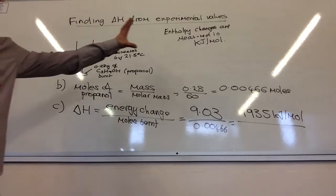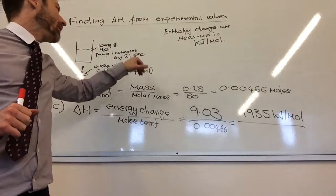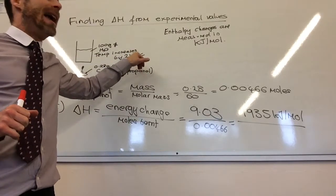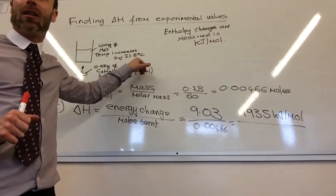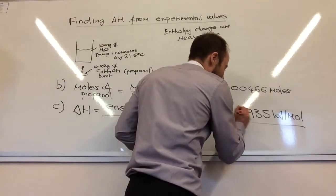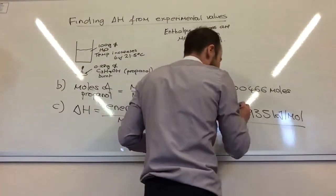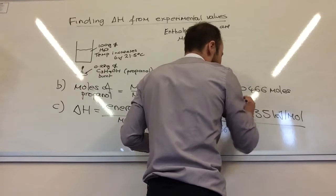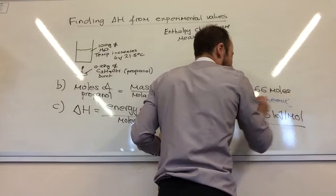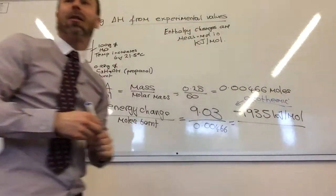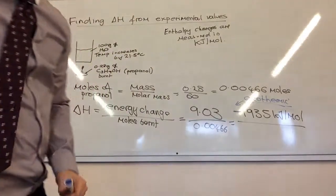But one thing that people always forget to do is, is this an exothermic or endothermic reaction? Exothermic reaction. We know that because my temperature went up. Exothermic reaction, what's the sign of delta H? Negative. You've got to put a negative sign in front of your reaction because it is an exothermic reaction. There will be a mark for putting that sign there.